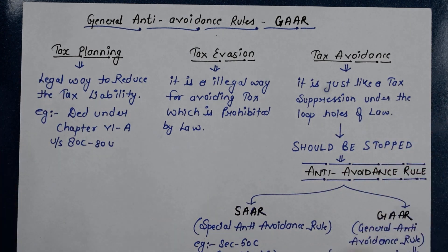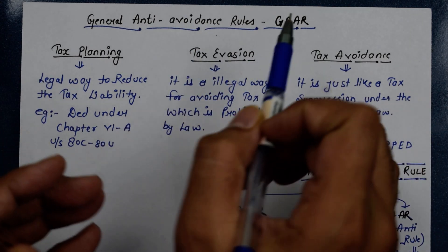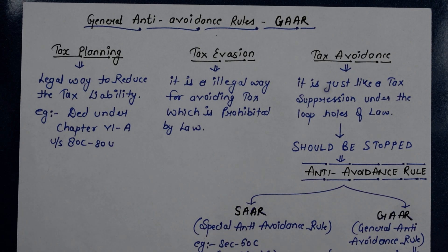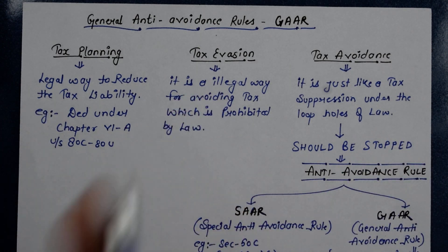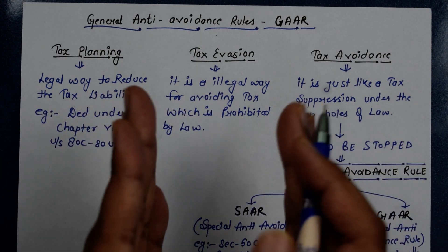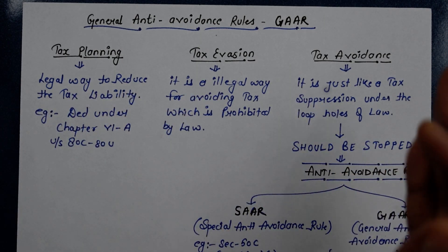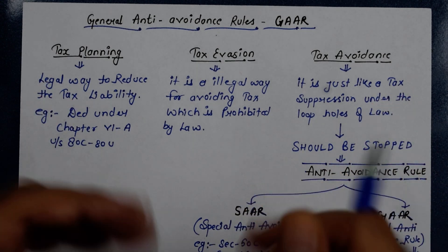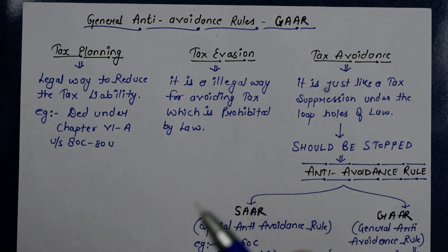For understanding GAAR — the General Anti-Avoidance Rule — you need a basic foundation which is very important. There are three basic things you need to know: tax planning, tax evasion, and tax avoidance. Understanding these three will help you understand why we need the General Anti-Avoidance Rule.